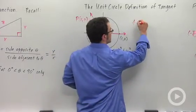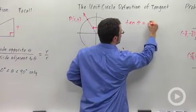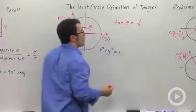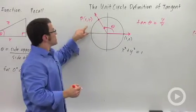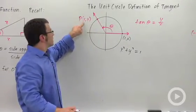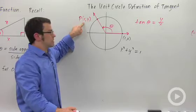the tangent of theta is defined to be y over x, where y and x are these coordinates. So the second coordinate divided by the first coordinate, that's the tangent of theta.